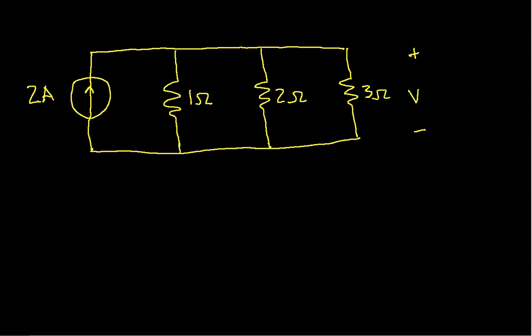So the strategy that we'll use is we will first identify the nodes in this circuit, and we will verify that indeed there are two, so that we have a single pair of nodes. Then we will find the current through each of the resistors in terms of the unknown voltage V, and then we'll apply Kirchhoff's current law, and then solve for V.